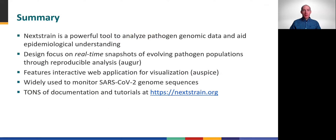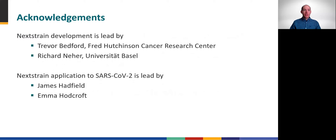In summary, Nextstrain is a powerful tool to analyze pathogen genomic data and is specifically designed to aid epidemiologic investigations. It has become very popular for SARS-CoV-2 because it provides real-time snapshots of evolving pathogen populations using both reproducible bioinformatics and slick interactive web visualizations. This module is intended only as an introduction to highlight key aspects and resources relative to the scope of this training toolkit for molecular epidemiology. A wealth of additional documentation can be found at nextstrain.org. Nextstrain is developed and maintained by a dedicated team led by Trevor Bedford and Richard Neher, with much of the SARS-CoV-2 work led by Emma Hodcroft and James Hadfield.